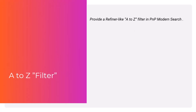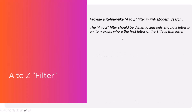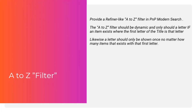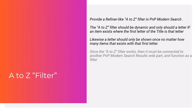The requirements we got are that we want to create an A-to-Z alphabetic filter in Modern Search, and it should be dynamic — meaning if I have some topic and the first letter of that topic is present, then we should see that letter. If we have the same letter present twice, we want to remove duplicates and only see it once.